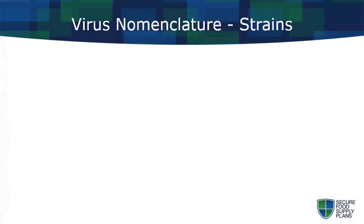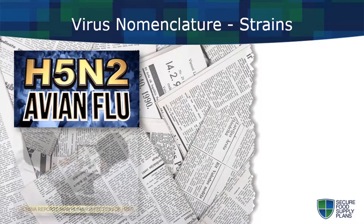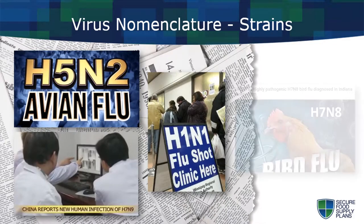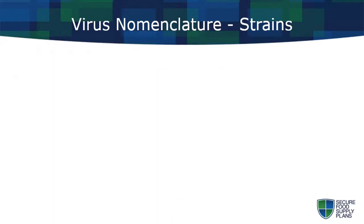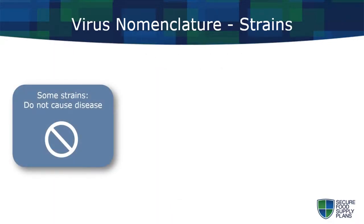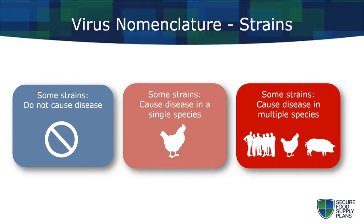All the potential H and N combinations can lead to a confusing array of names appearing in the media. This is made even more perplexing because there may be more than one strain within a given subtype. Following exposure, different strains may behave differently in animals or humans, with some strains not causing disease, some causing disease only in a single species, and some causing disease in multiple species. Outbreaks of avian influenza sometimes may involve more than one strain.